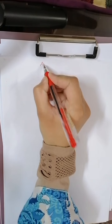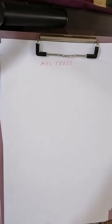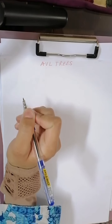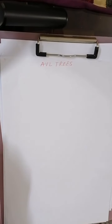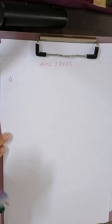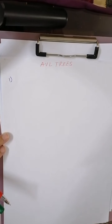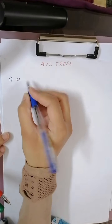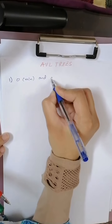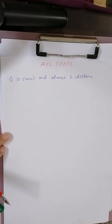The topic today is AVL trees. There are two things to know before going into detail. First, AVL trees are basically an example or extension — a specialized form of binary tree. As per the properties of binary tree, the first condition is that the maximum number of children can be two — zero is the minimum and at most two children. AVL trees also satisfy that property of binary tree.